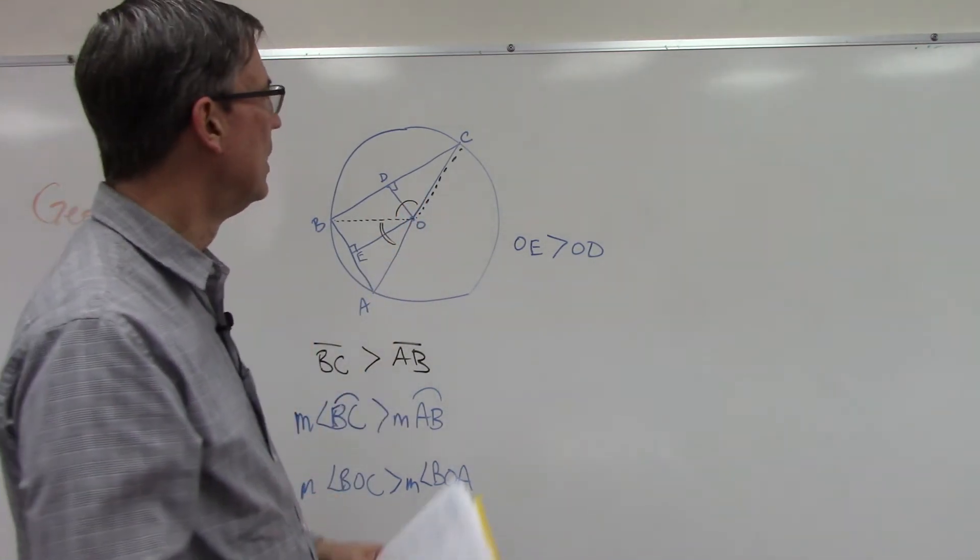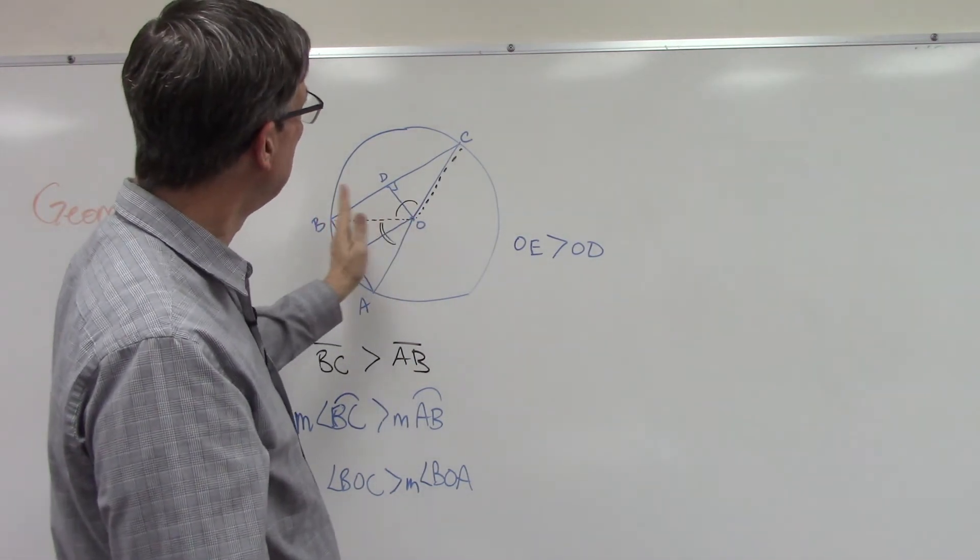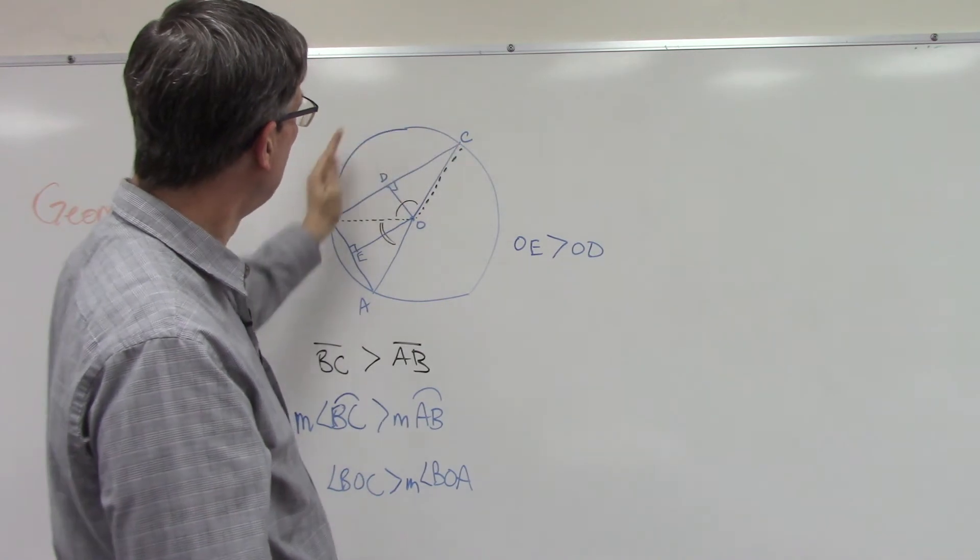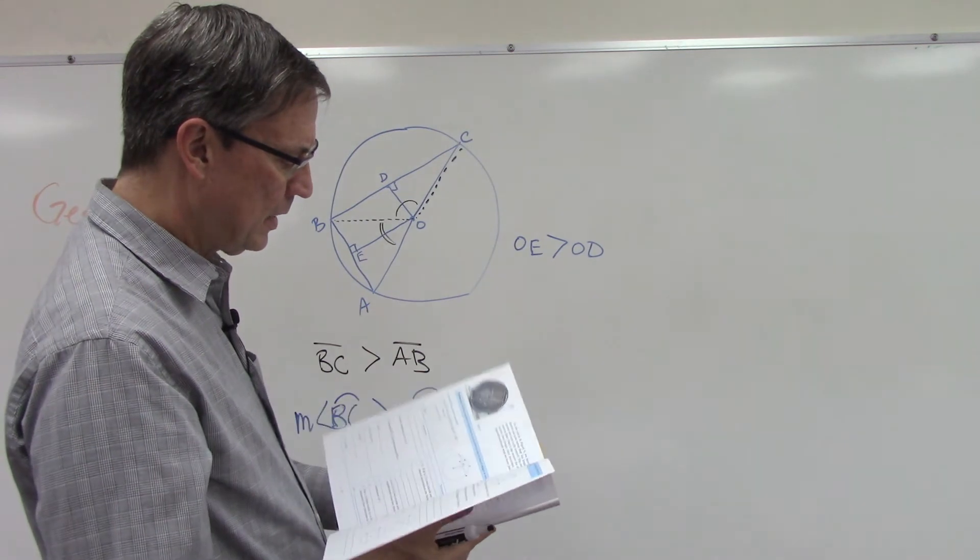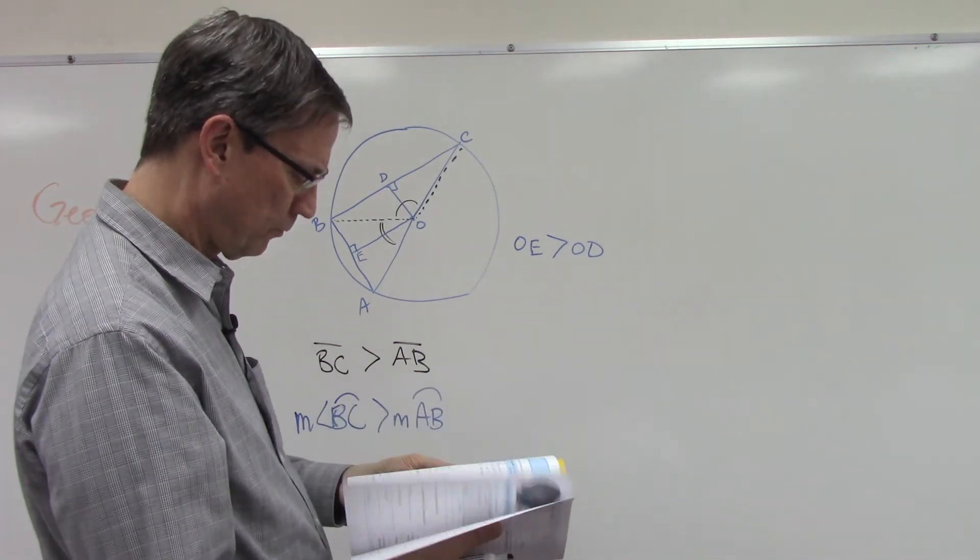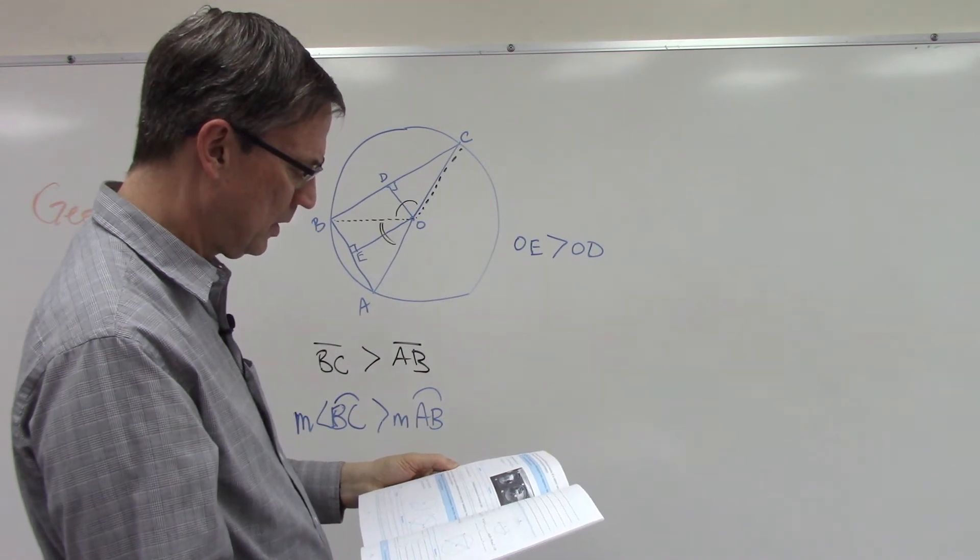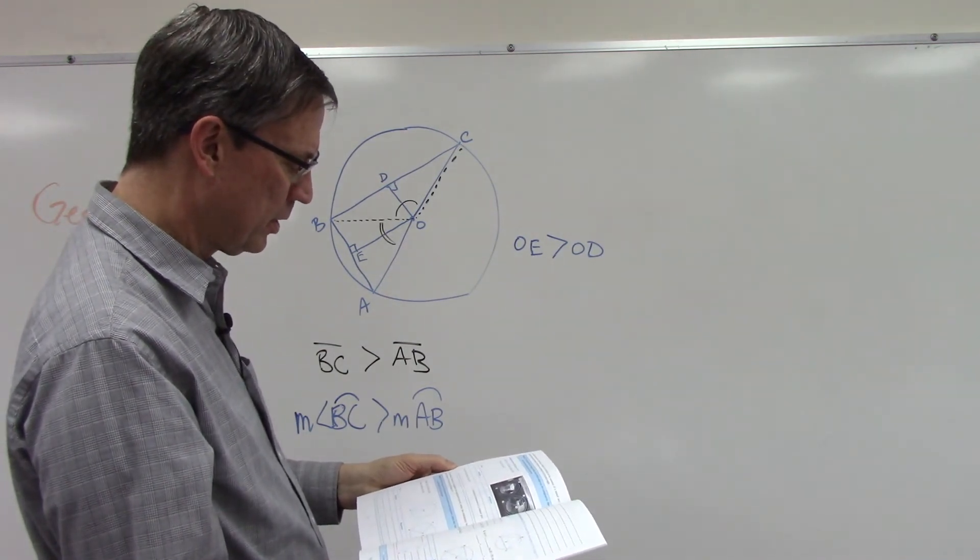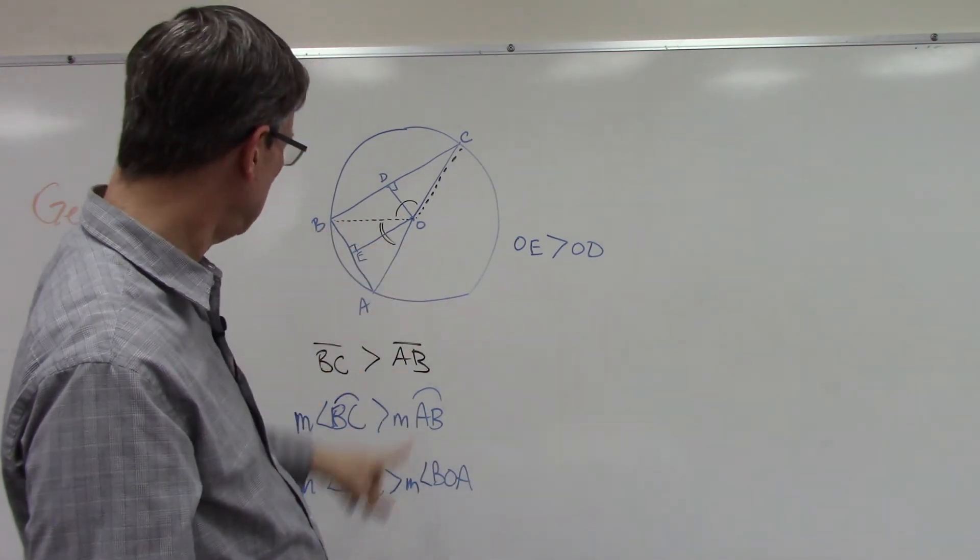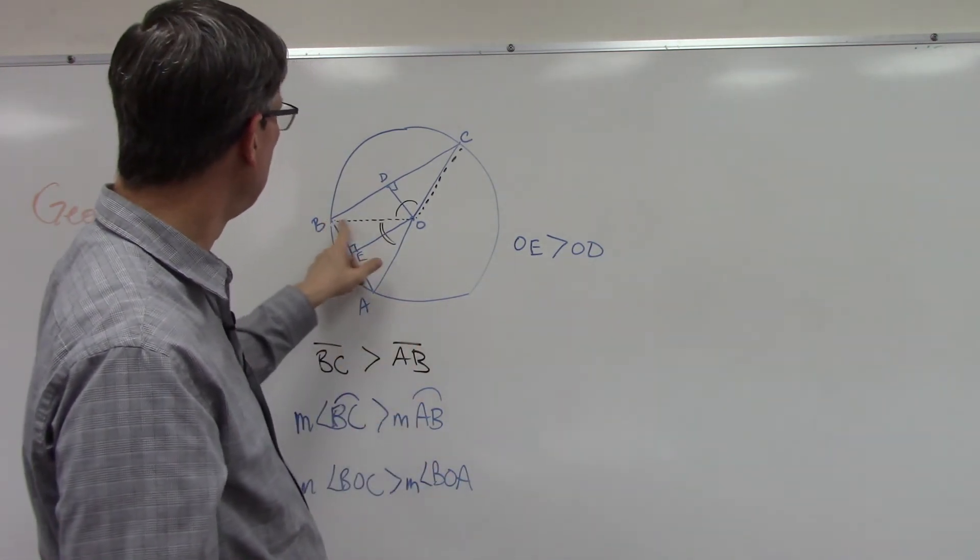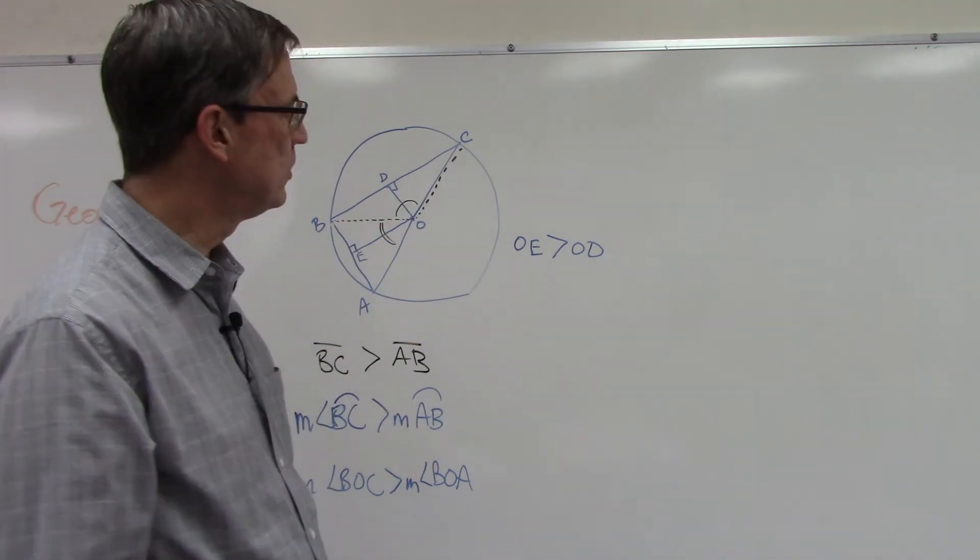This is not actually drawn in here, but imagine BOC—we're trying to prove that's bigger than this angle. This angle compared to this angle, yeah definitely bigger. But how do we know that? These are central angles.